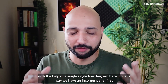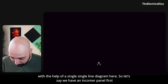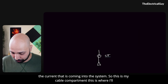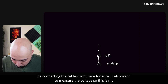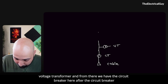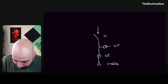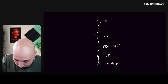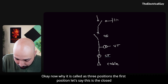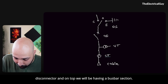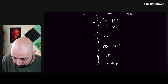Let us quickly understand with the help of a single line diagram. We have an incoming panel with a cable entry. From there, we have a current transformer to measure the current coming into our system — this is the cable compartment where cables are connected. From there, we also want to measure voltage, so we have a voltage transformer. Then we have the circuit breaker, followed by a three-position disconnecting switch — closed position, open position, and earth position — and on top, we have the busbar section.